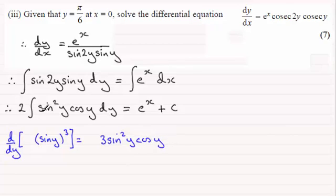But there is no 3 in front of this integral here - it's just sin²y cos y. So I can make an adjustment factor because it's just a constant.